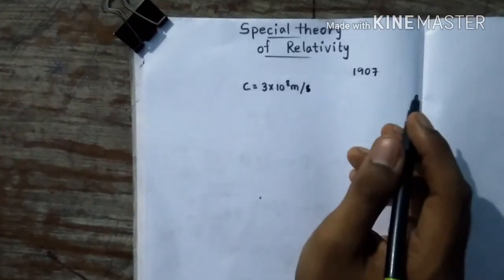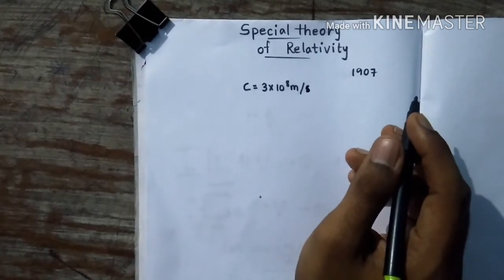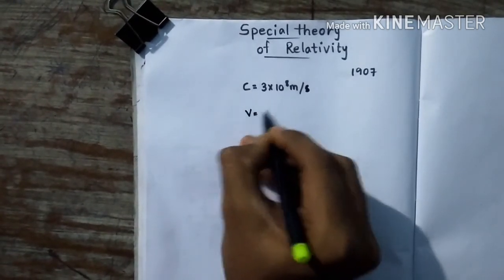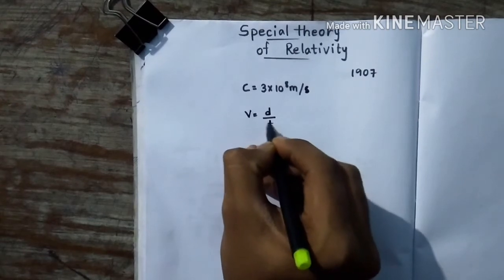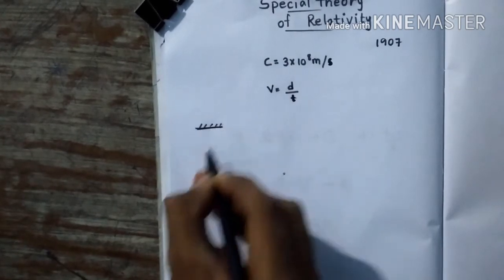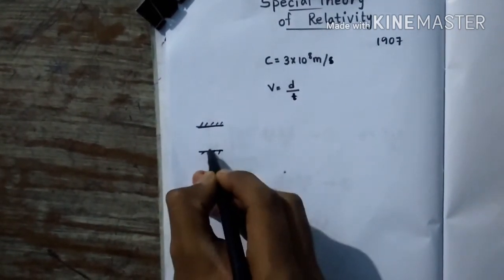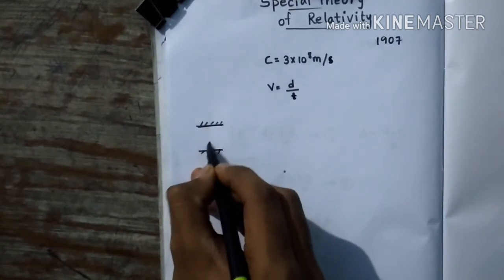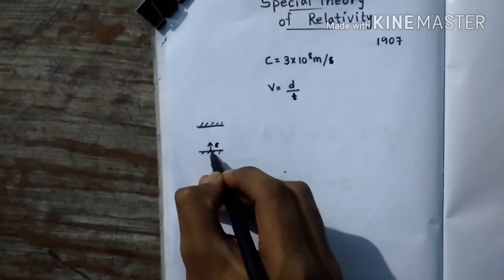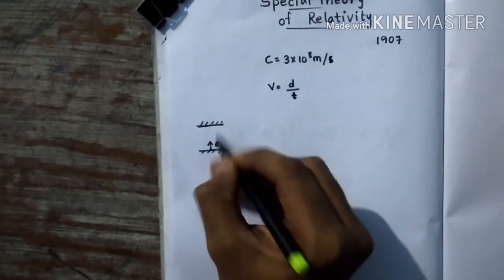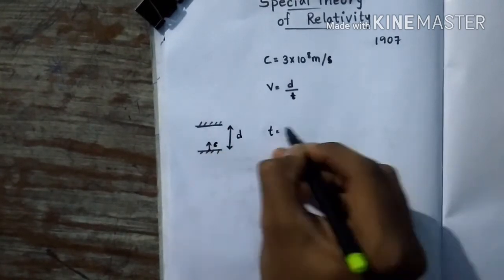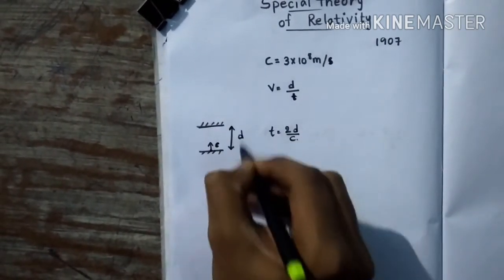First, let's talk about time dilation. As you all know, v equals distance divided by time. Let's consider a clock — two mirrors parallel to one another, with a photon oscillating between them at speed c. The time taken for the photon to make one oscillation will be t₀ = 2d/c, where d is the distance between the mirrors and the photon travels to and fro.